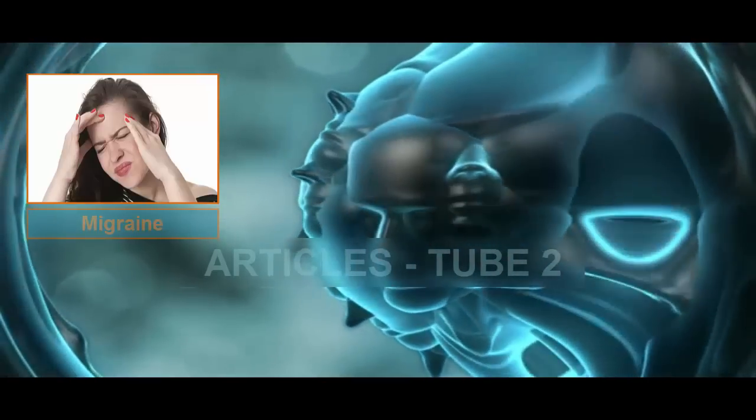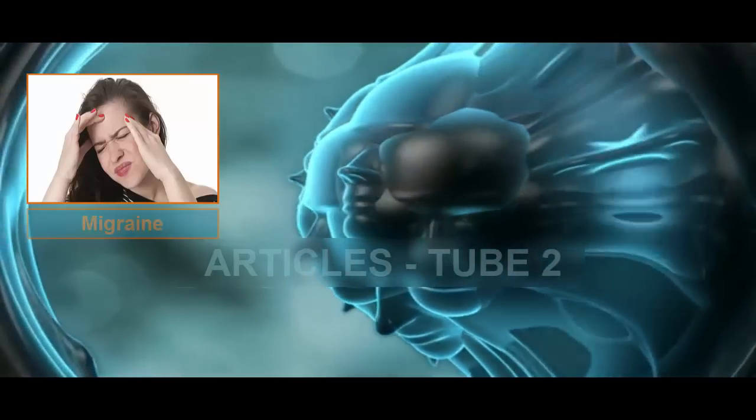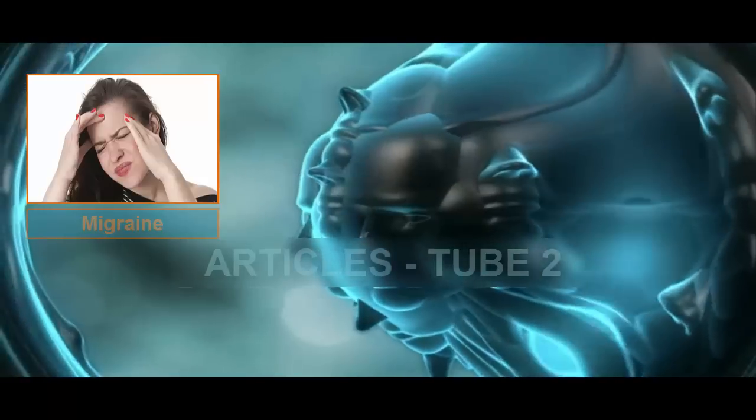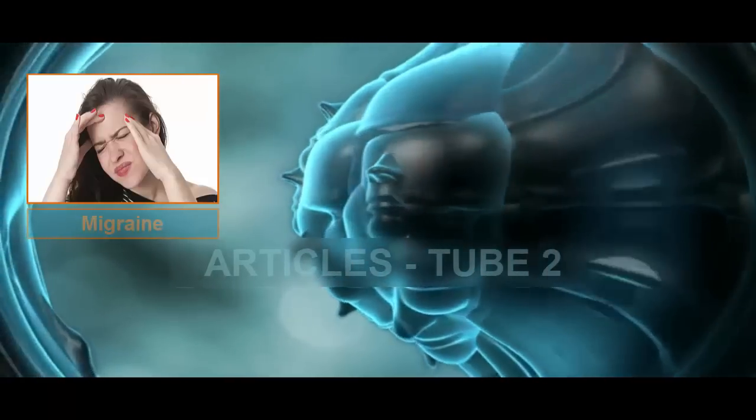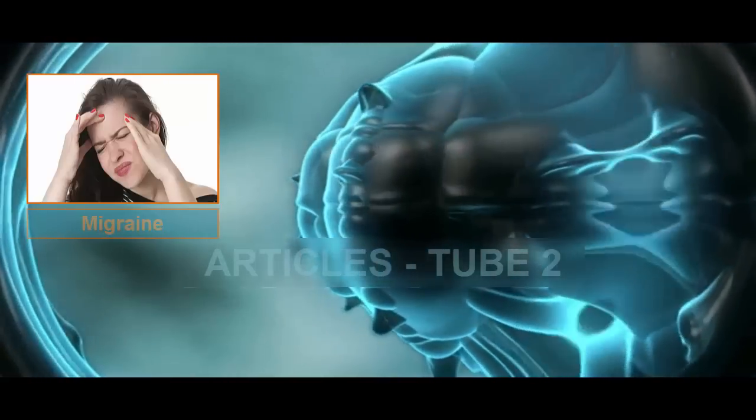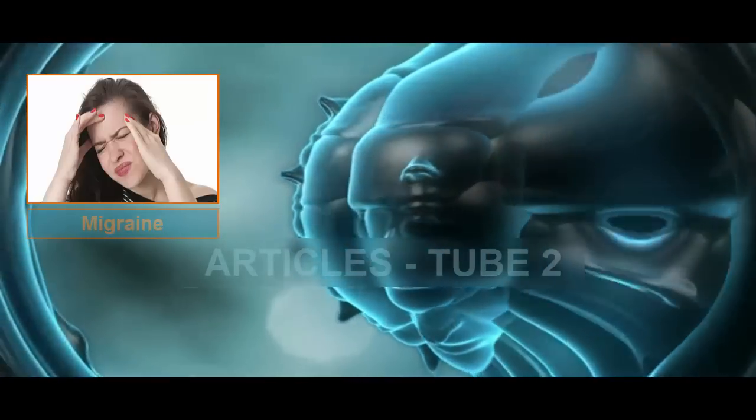The prodrome phase is a group of vague symptoms that may precede a migraine attack by several hours, or even a day or two. Such prodrome symptoms can include sensitivity to light or sound, changes in appetite, fatigue and yawning, malaise, and mood changes.